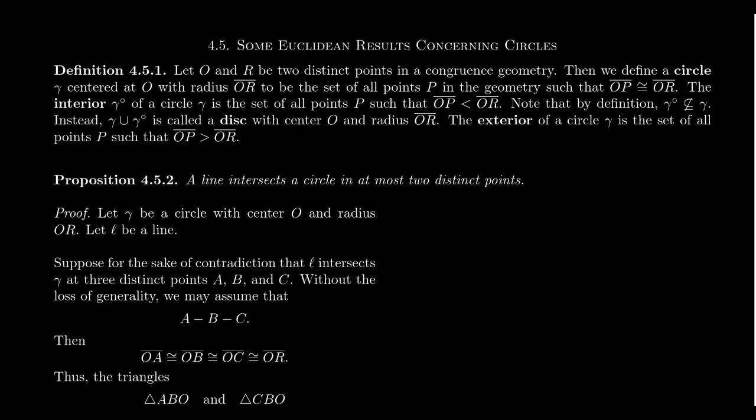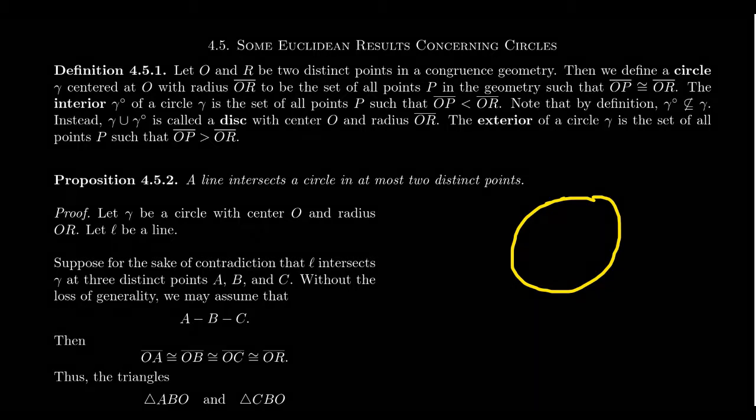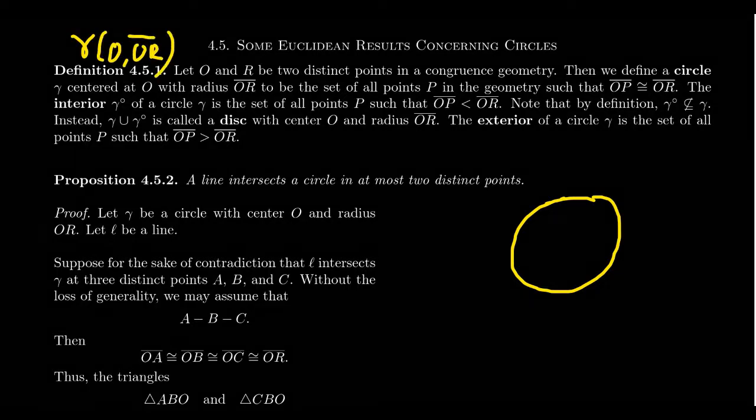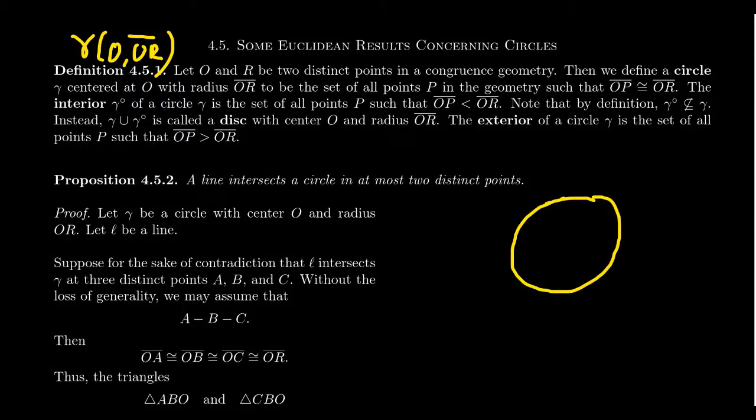So the circle is a set of points which are a locus, that is, they satisfy some equation. We want all of the points that satisfy the equation OP is congruent to OR, where O and R are considered fixed points, and then P is allowed to vary. So that is what we define to be the circle. The circle itself, as we often draw them like this, the circle is the elements right here on this circumference.